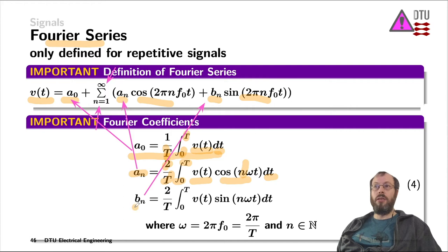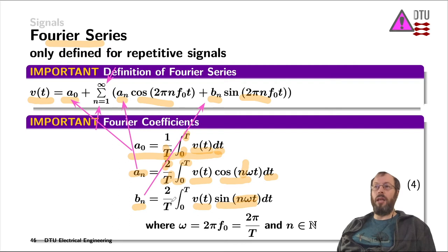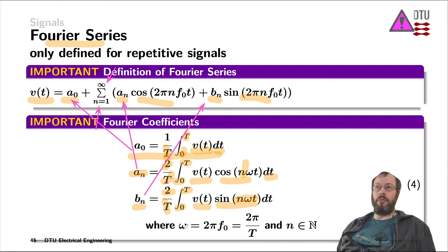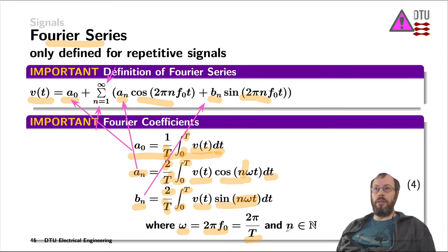Similarly, for the Bn Fourier coefficient, instead of multiplying the original signal V as a function of time with the cosine wave, it's a sine wave — but again, at the nth frequency for the nth harmonic. Then we average over time after integrating from 0 until the period time T, and we multiply by a factor of 2. So omega is 2 times pi times the fundamental frequency, which is 1 over the period time of the original signal, and n is a counter — a natural number.